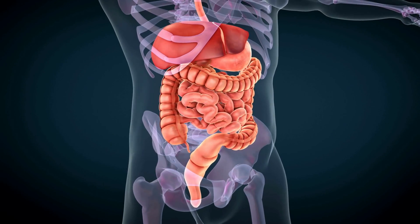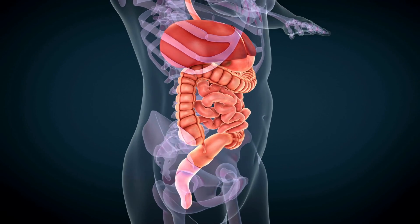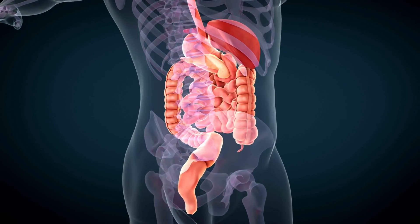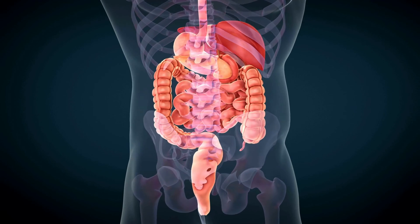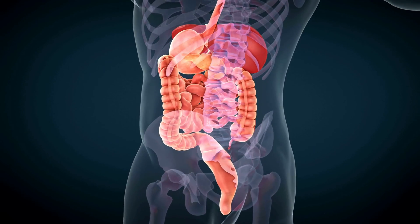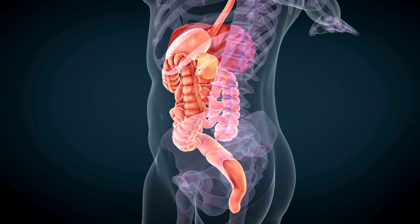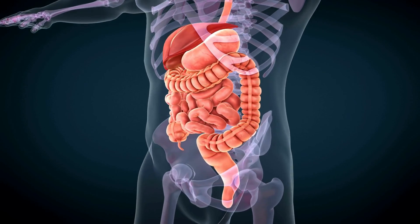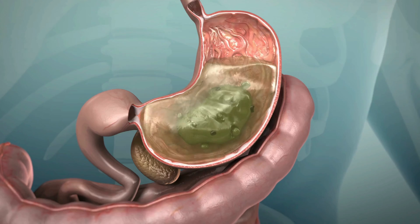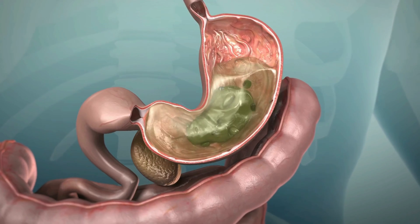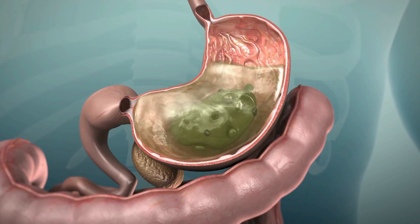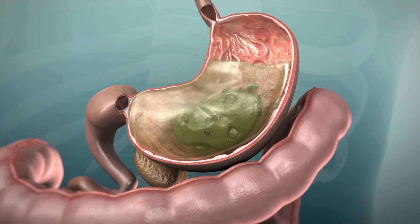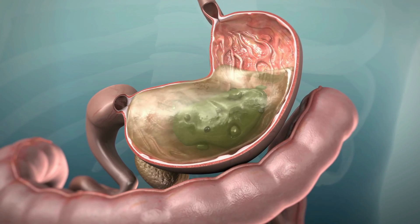Ever wondered about the intricate journey your food takes inside your body? Today, we're diving deep into a lesser-known but crucial part of our digestive system: the hepatic flexure. The hepatic flexure, also known as the right colic flexure, is found in the digestive system and creates the bend in the colon. The name is influenced by its proximity to the liver — the word 'hepatic' comes from 'hepar,' meaning liver in Greek, and a flexure is a bend or fold.